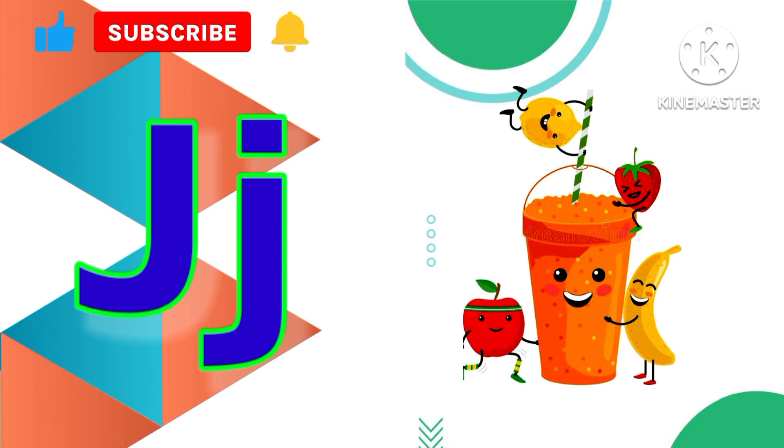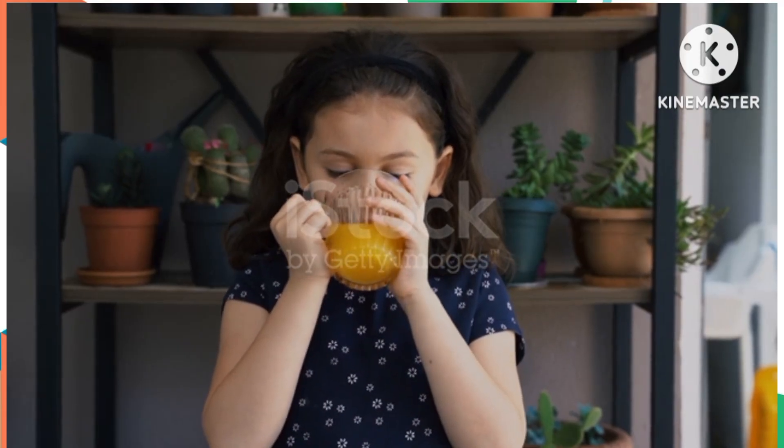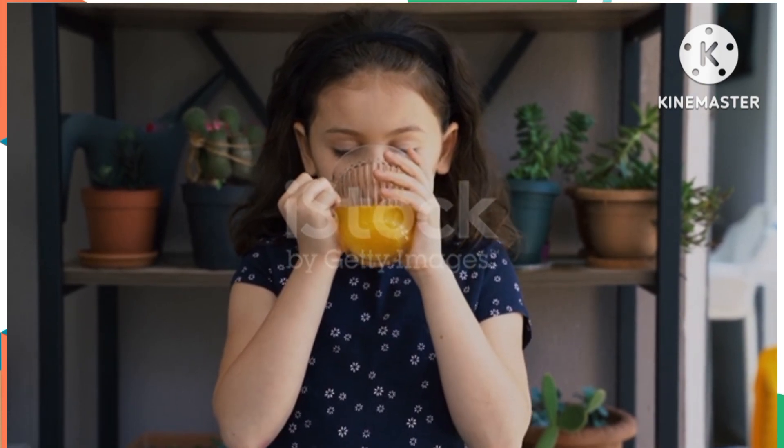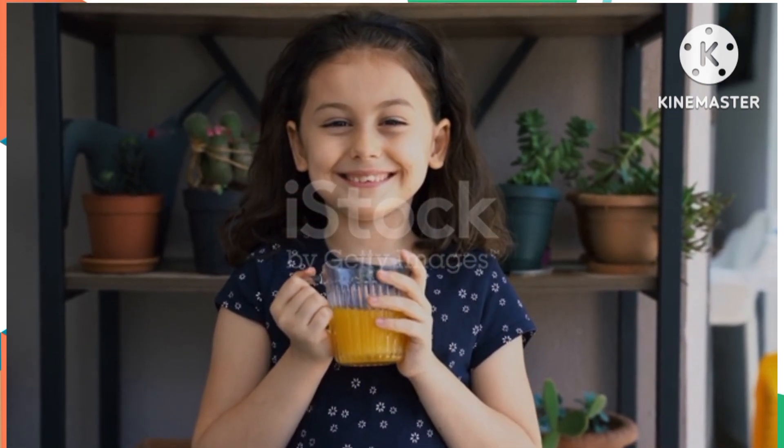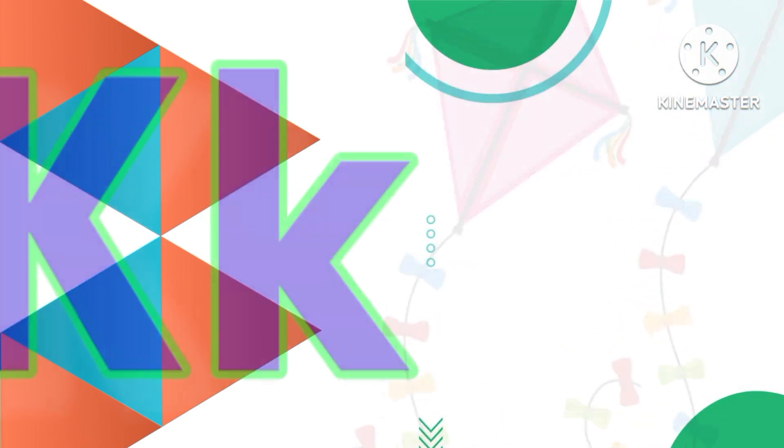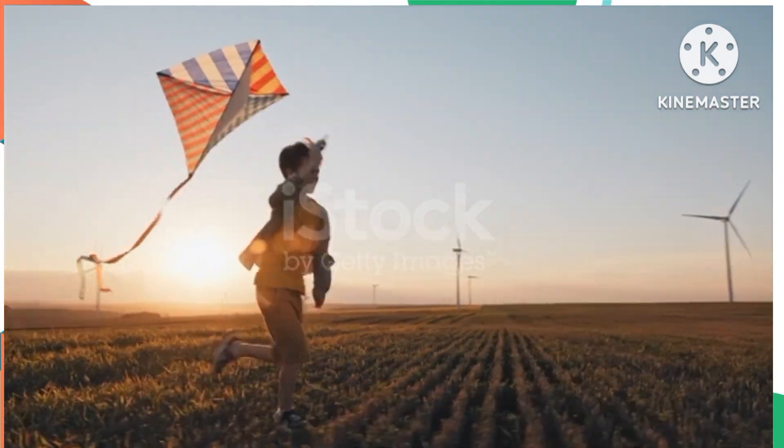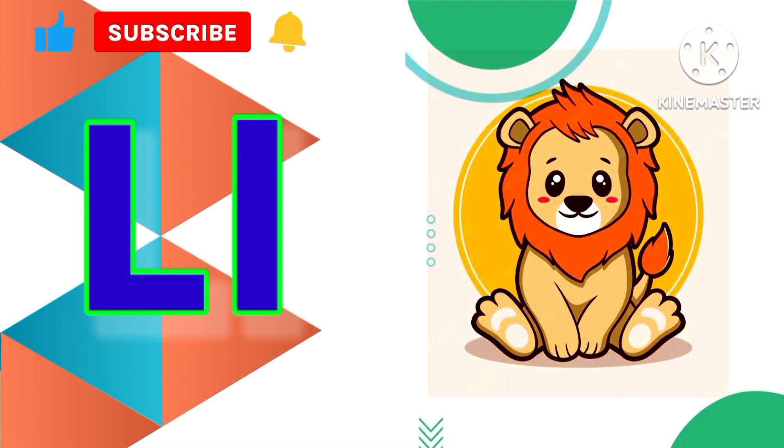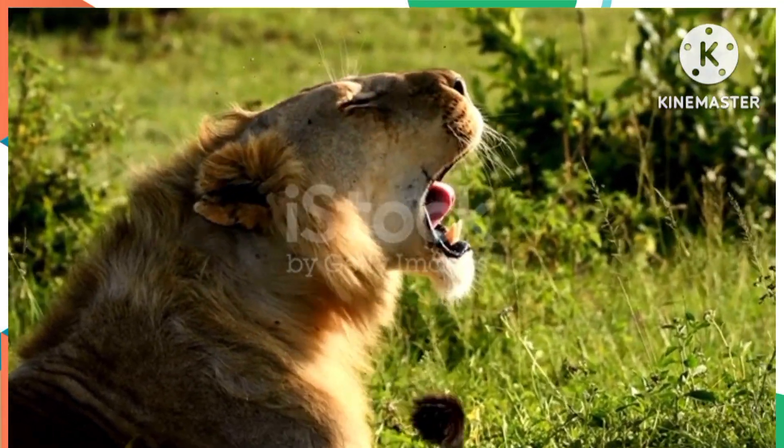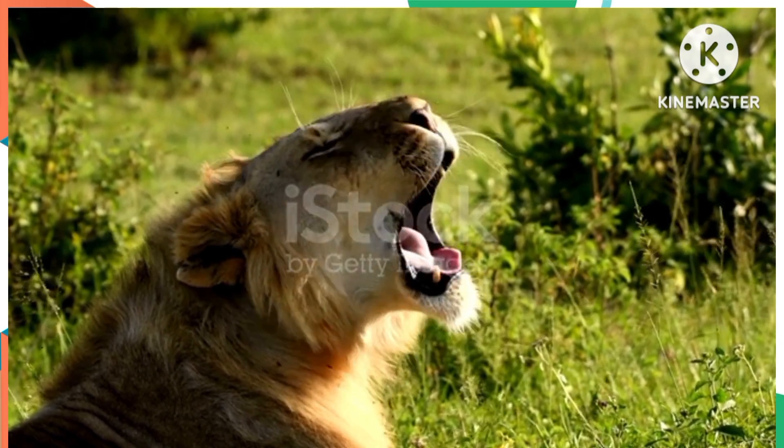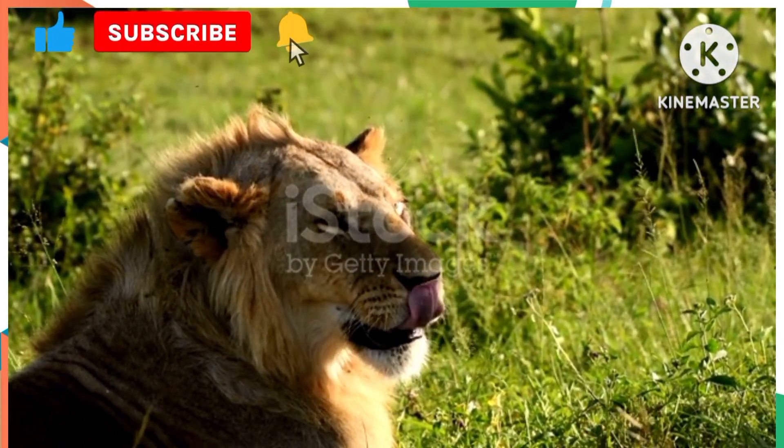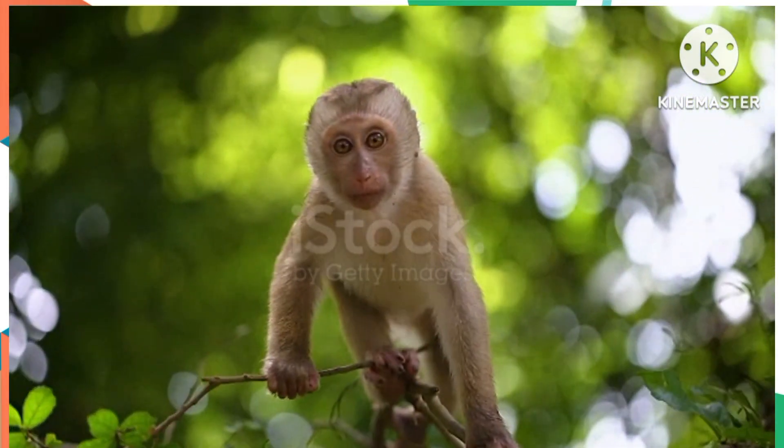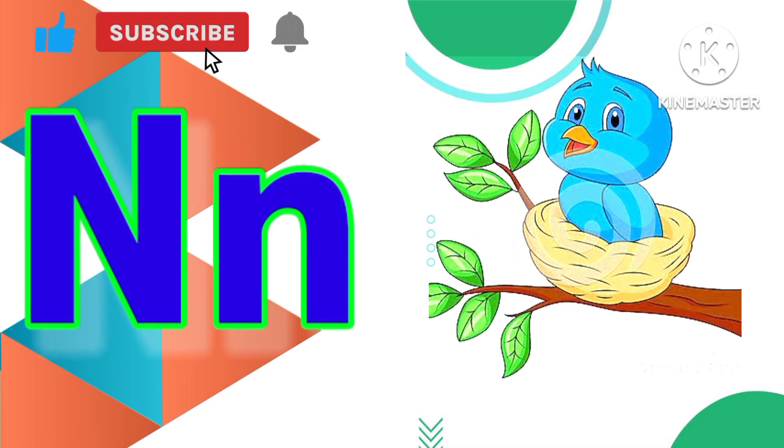J is for Juice. K is for Kite. L is for Lion. M is for Monkey.